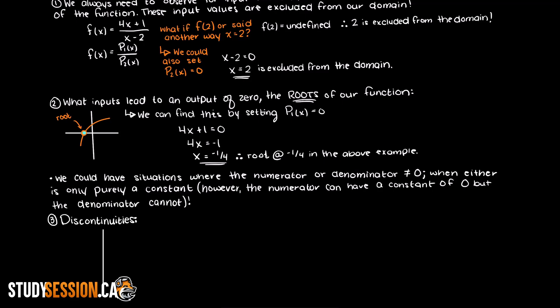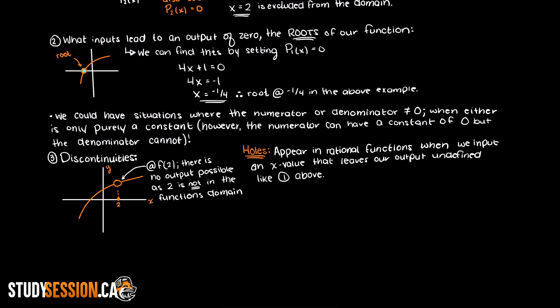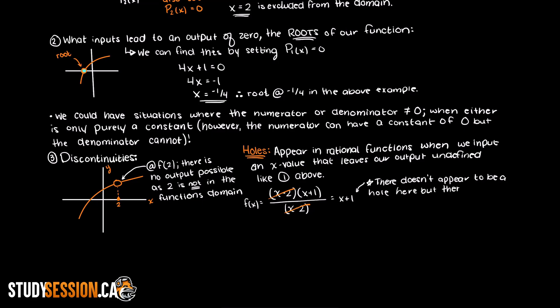Thirdly, we need to watch out for areas on our graph where our function is not applicable — these are called discontinuities. For example, look at this graph here. We have a hole at x equals 2, meaning that at x equals 2 there is no output. Just note that even if two terms cancel out, as in this example, there will still be a hole at that input even though it doesn't appear to be a hole when observing the simplified function. We know that if we apply x equals 2 to the original equation we will receive a 0 in the denominator and therefore have a hole.